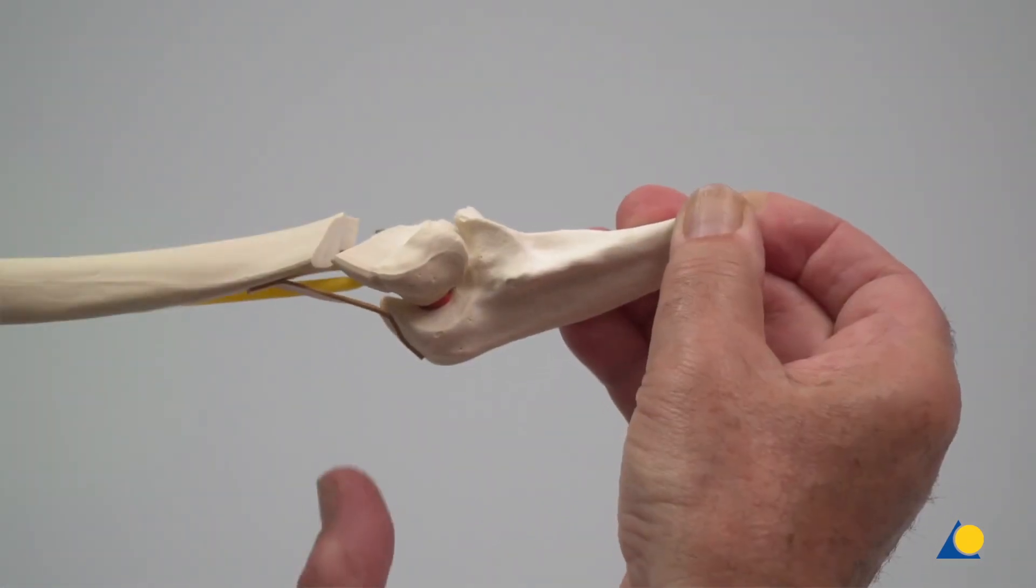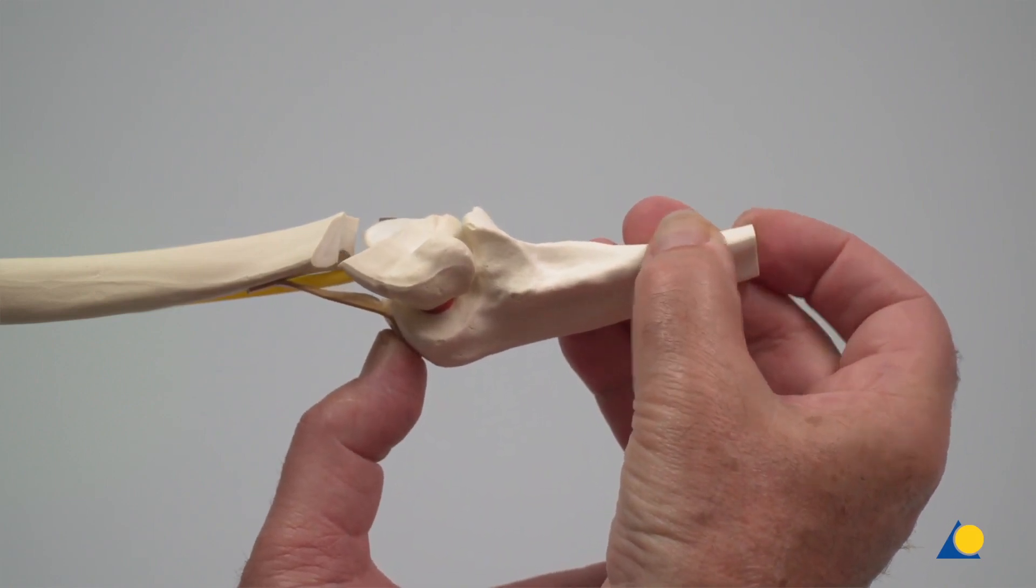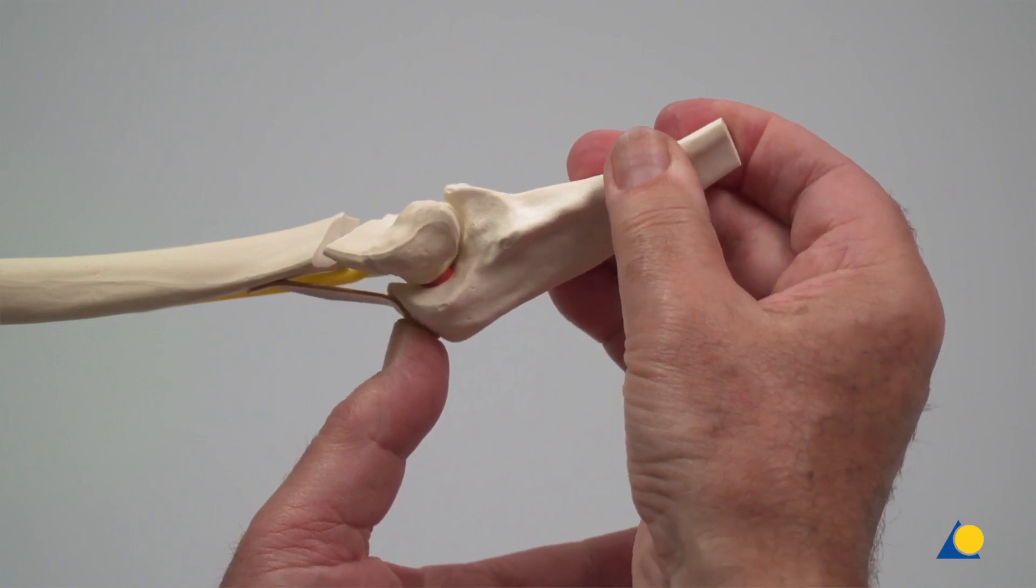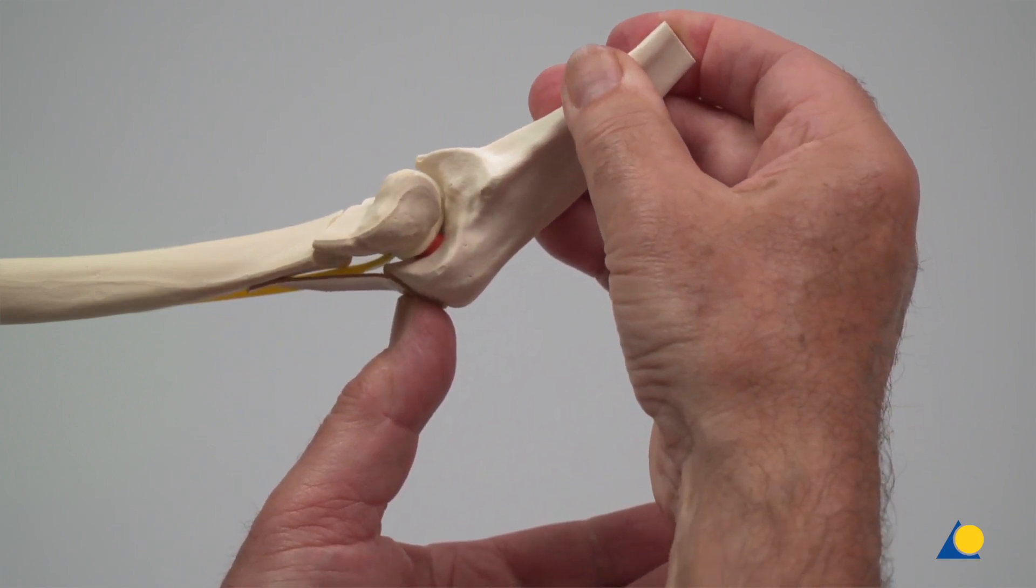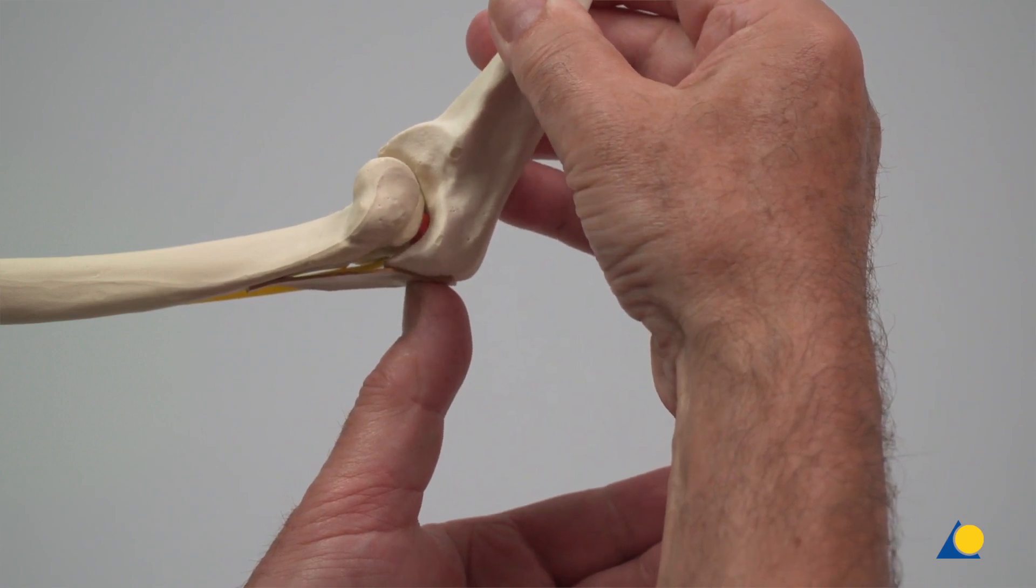If reduction is proving to be a challenge, the olecranon can be supported by hand and the fragment positioned and reduced by manipulating the forearm. To verify that the fracture is correctly reduced, the forearm is flexed.